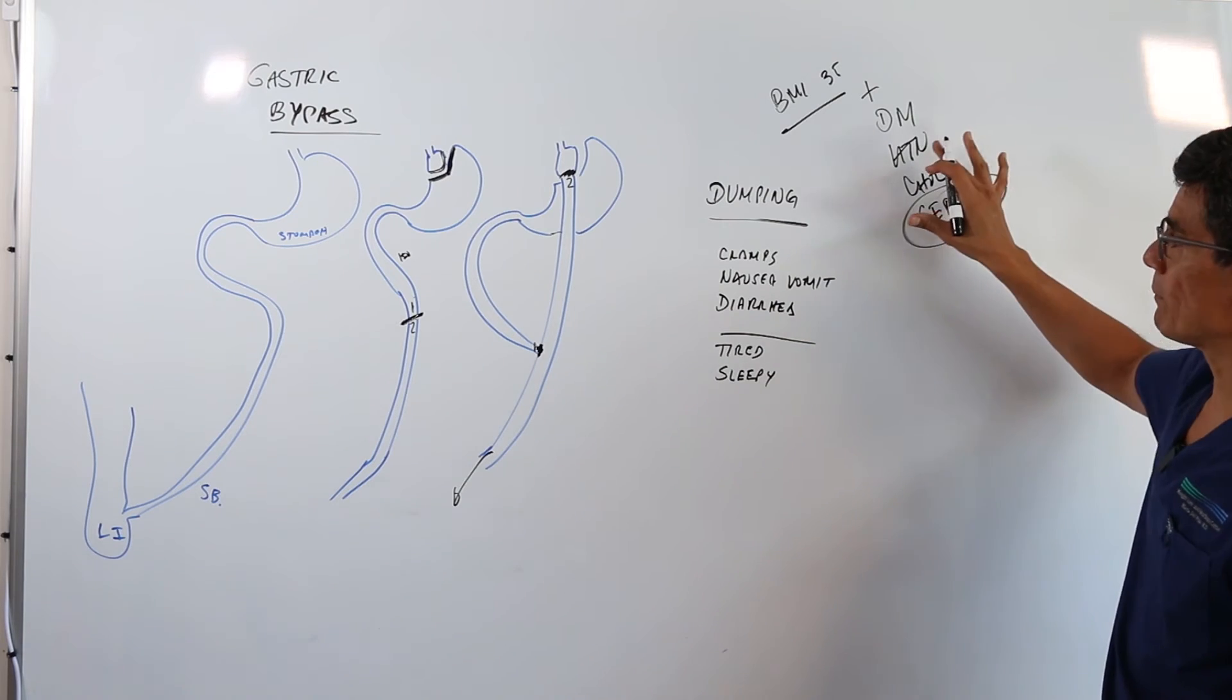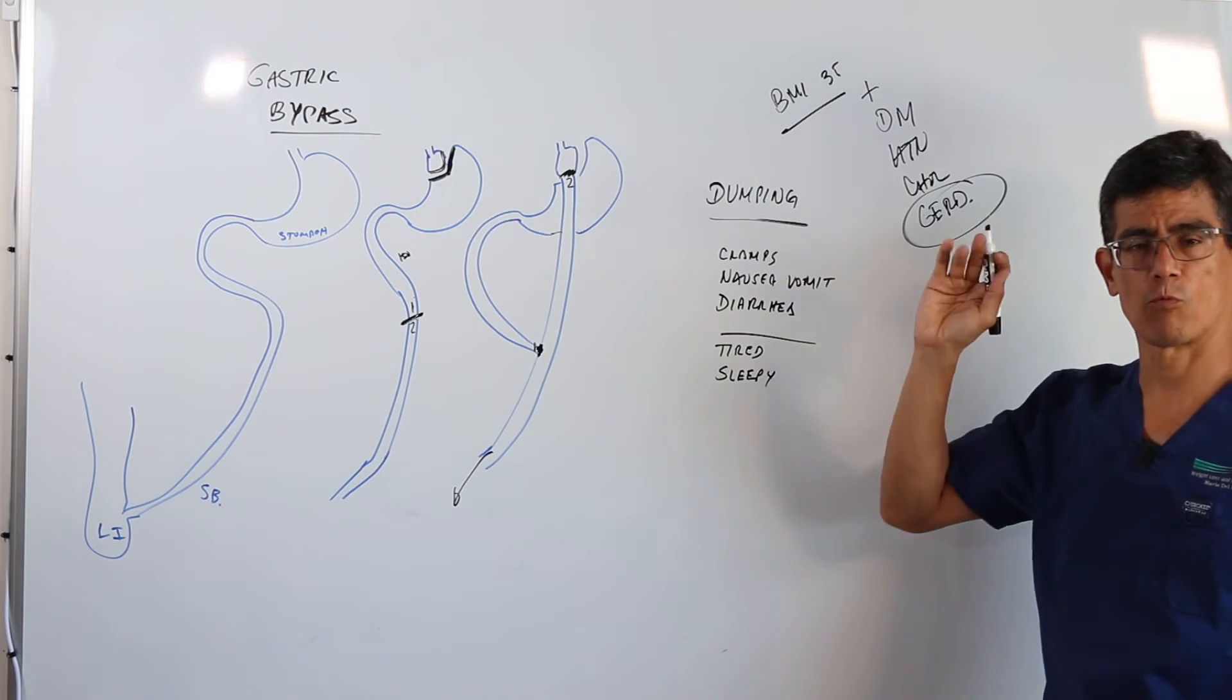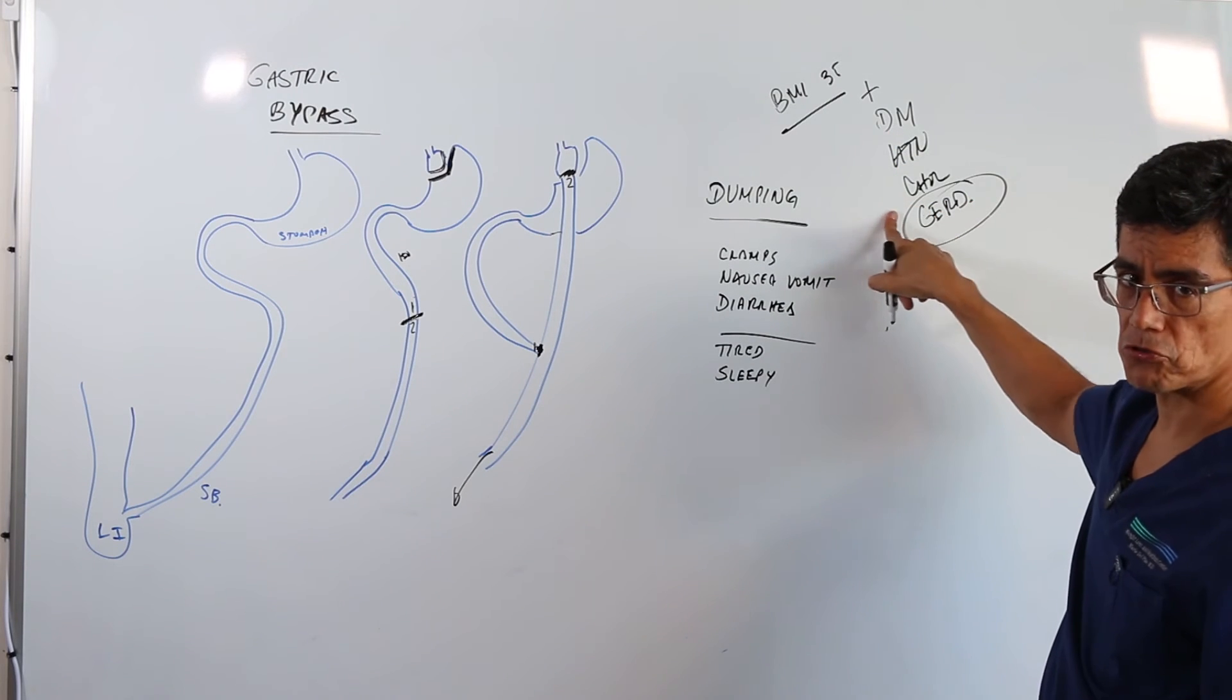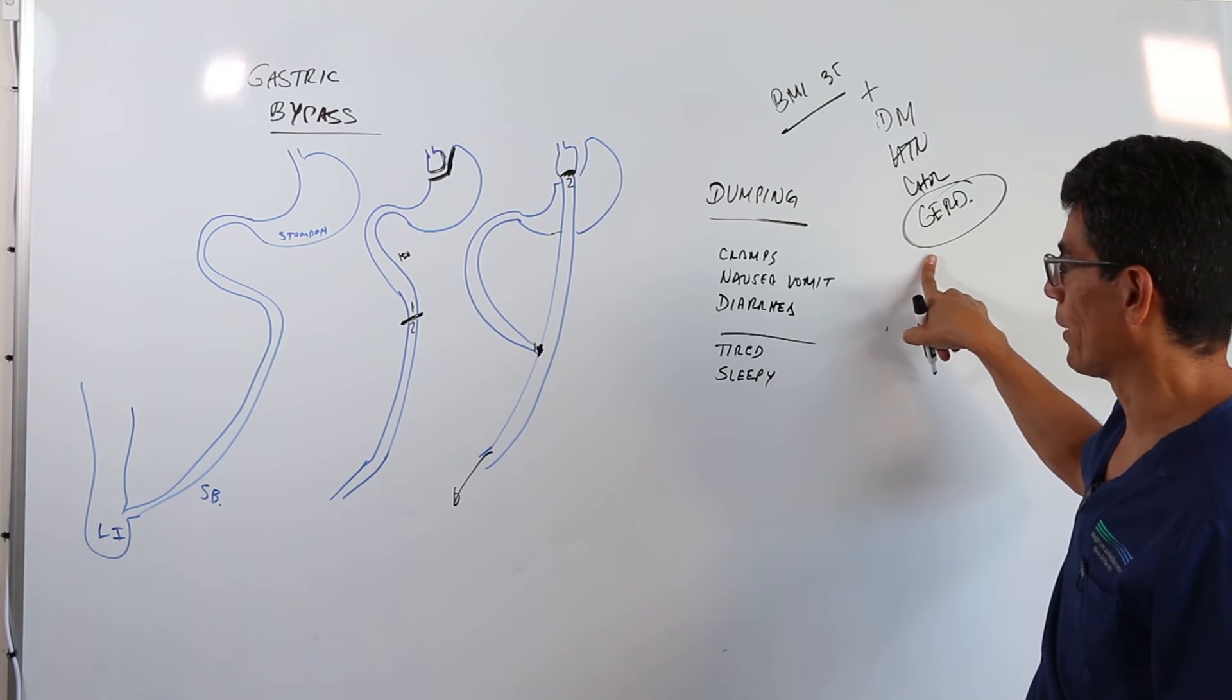Why? Because the gastric bypass has more of what we call a metabolic effect to fix this problem. So your diabetes, your blood pressure and cholesterol, your reflux can all go away.